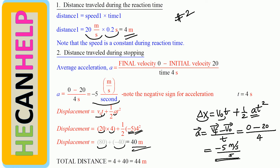Displacement is 40 meters. So the distance traveled during braking is 40 meters. We have 4 meters during the reaction time and 40 meters during the braking time. So the total distance traveled is 44 meters. This is Approach number 2.